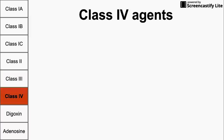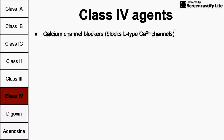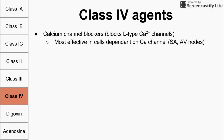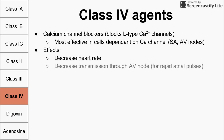Class 4 antiarrhythmic agents specifically block L-type calcium channels. These are most effective on the SA and AV nodes, because these nodes depend on calcium channels for their depolarization and pacemaking ability. The effects include decreasing heart rate by affecting the SA and AV nodes, and decreasing transmission through the AV node.